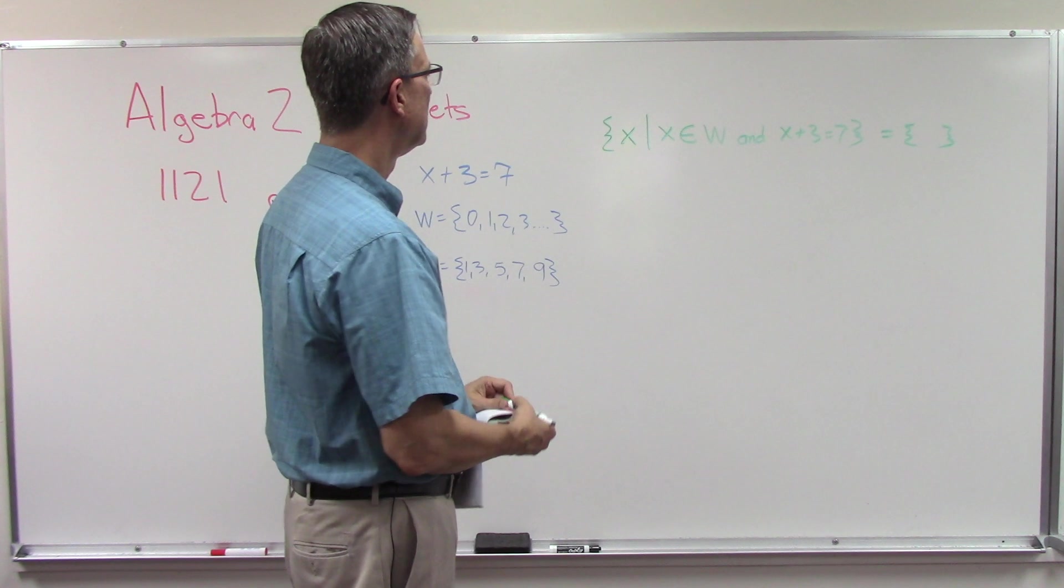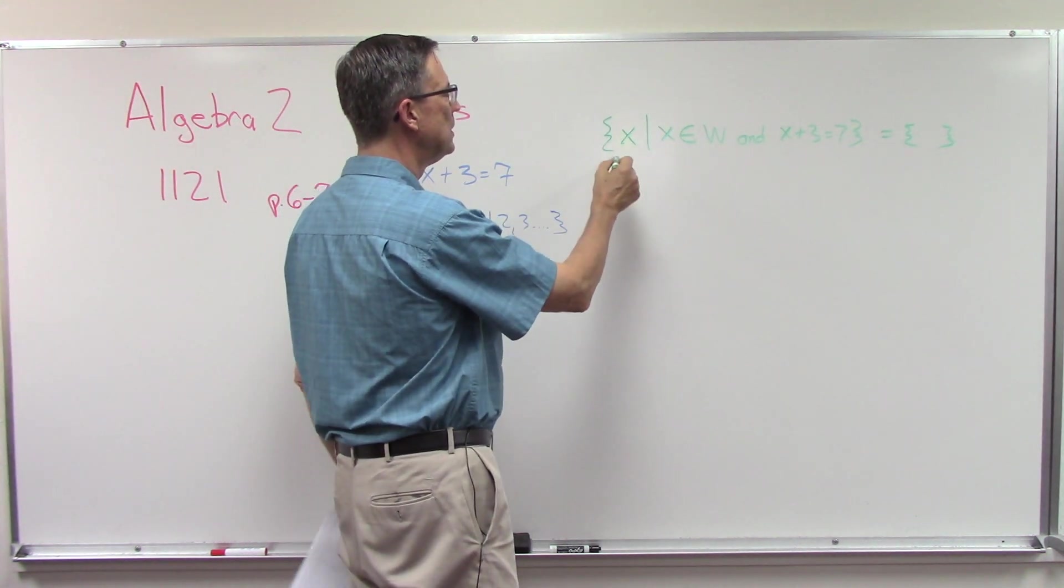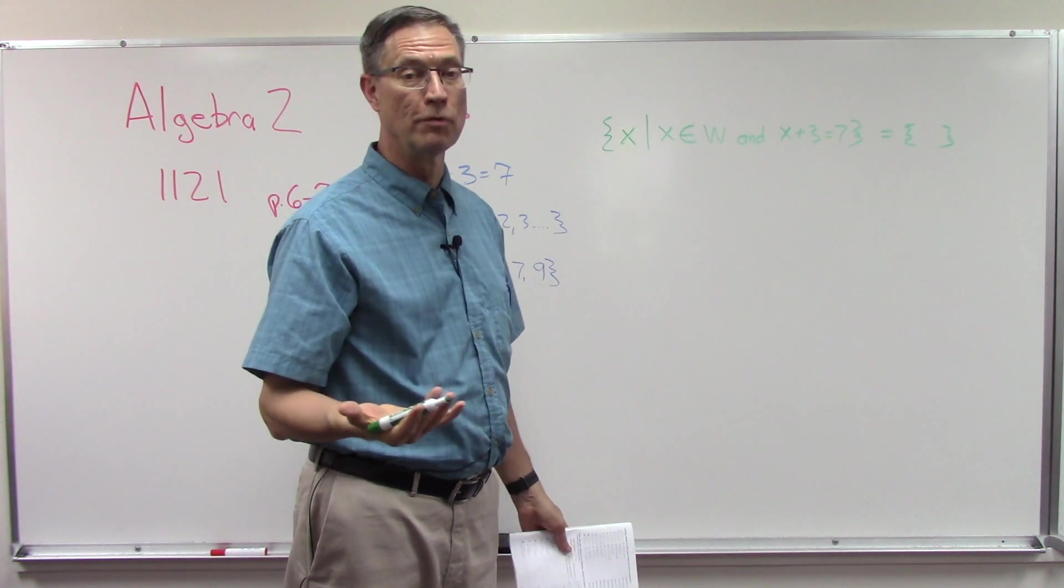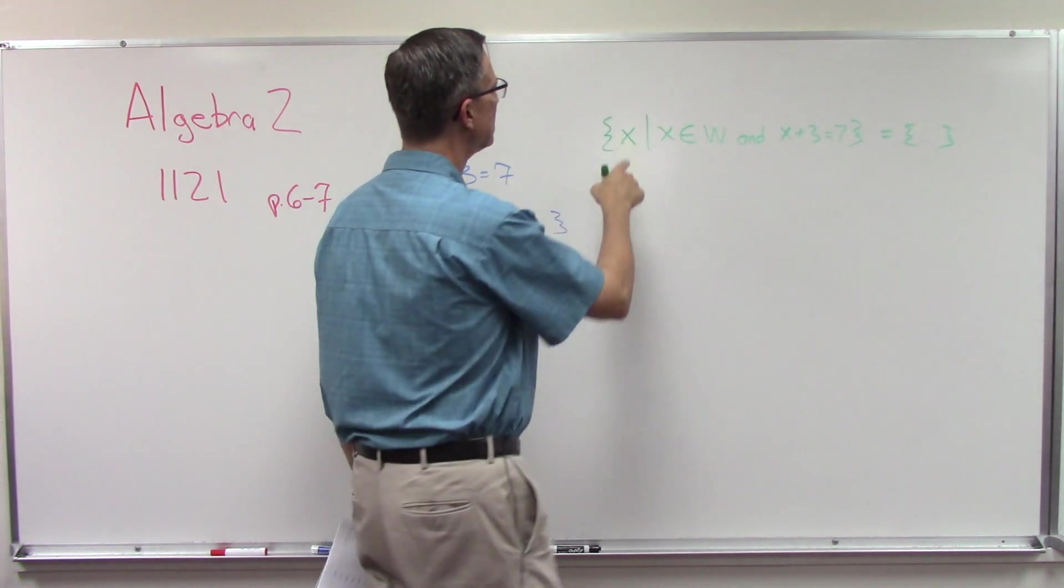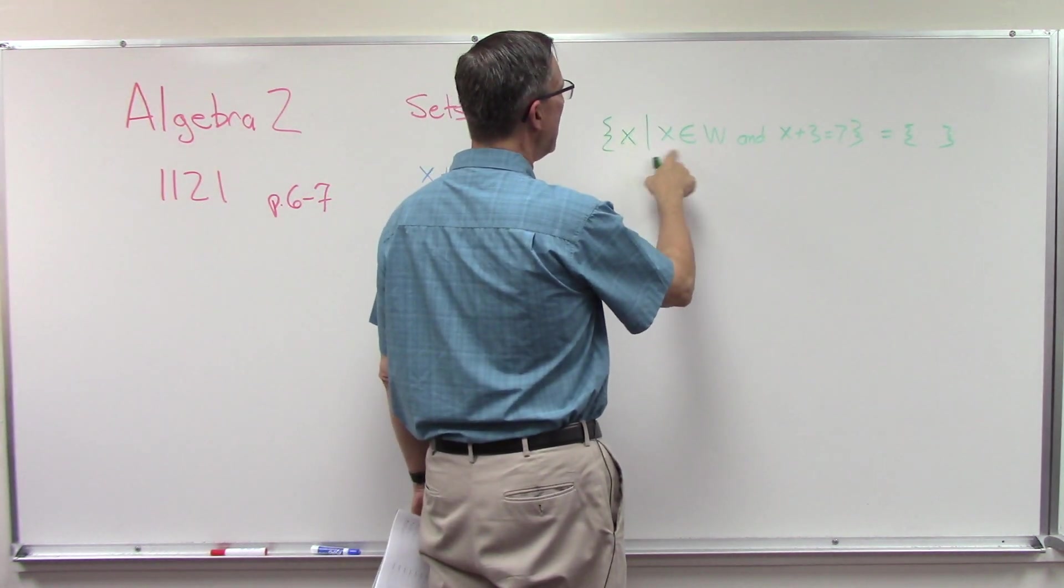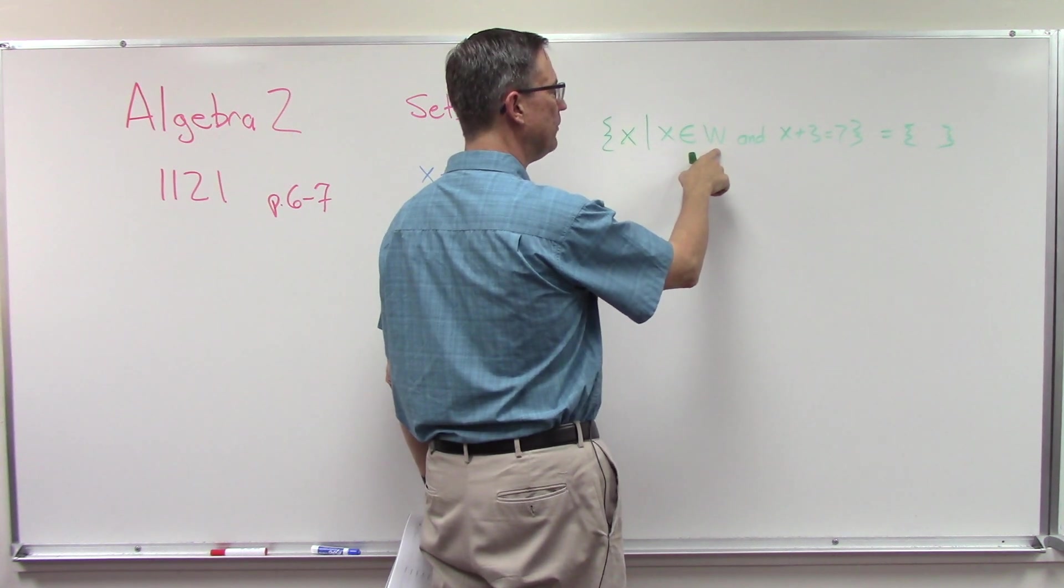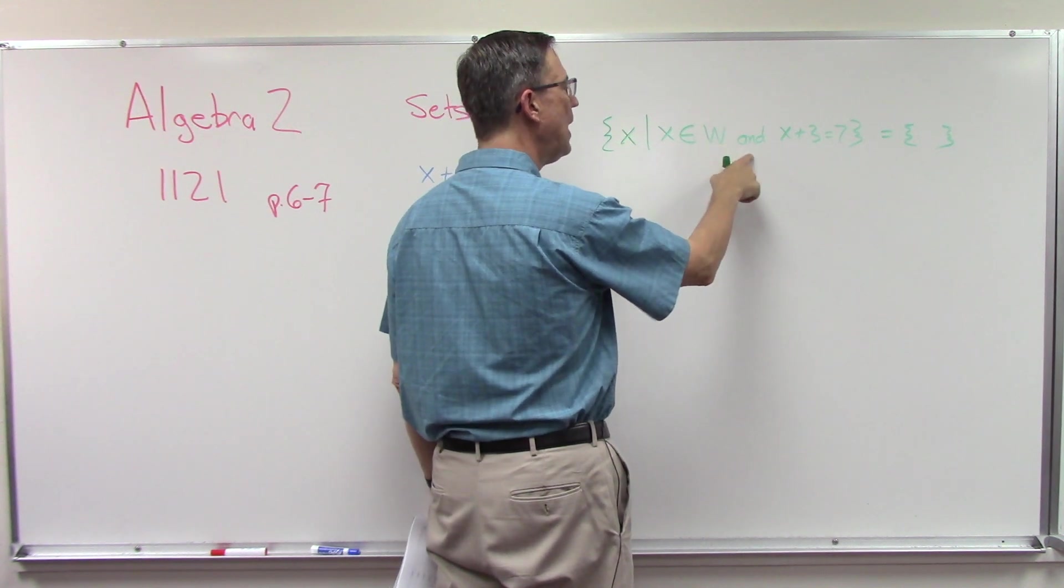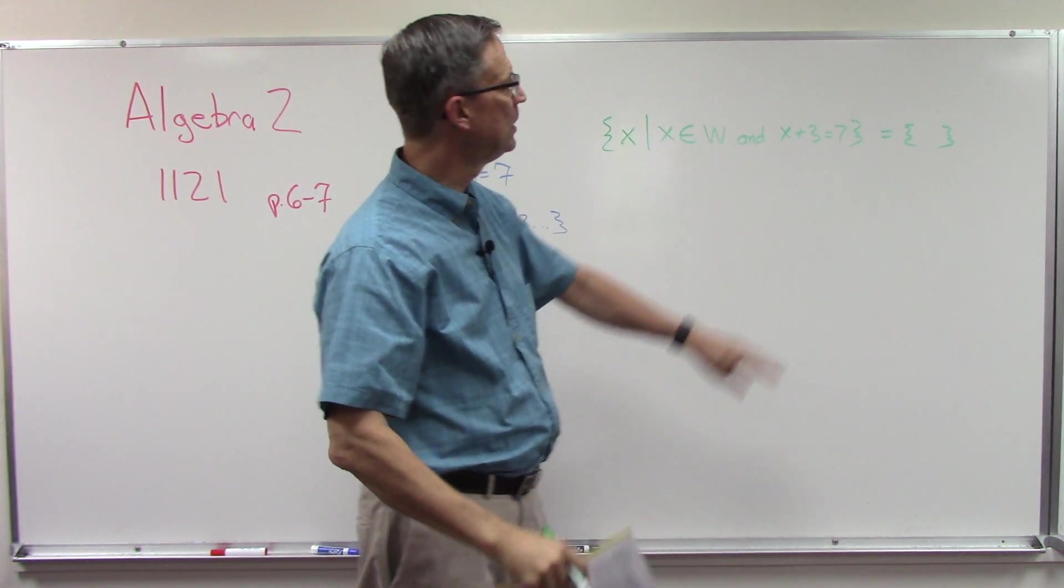I try to do it all in one fell swoop, so you might have to practice kind of drawing that. Some students find that challenging. So what this notation here means is these x is our answer. That's what we're solving for. So x is an element of set W, so whatever the answer is for x is going to be in set W and it also has to meet this condition.